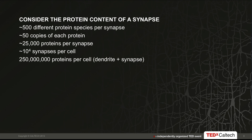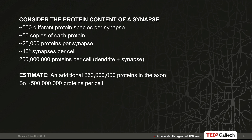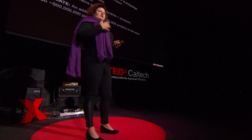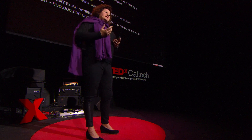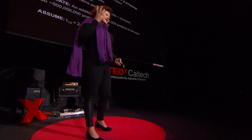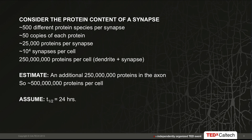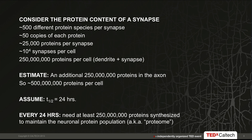The cell also has an equally elaborate architecture for sending information in the axon — let's add another 250 million proteins there. So on average we have something like 500 million proteins per cell. But unlike memories, the proteins only last a little while. On average, the half-life of a protein — the time when it's gone through half of its lifetime — is about 24 hours. So in a single cell, every 24 hours, we need at least 250 million proteins just to keep the neuron at status quo.